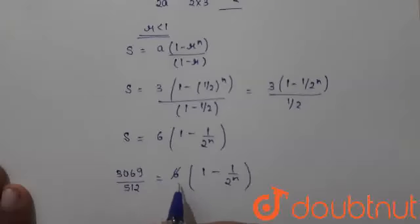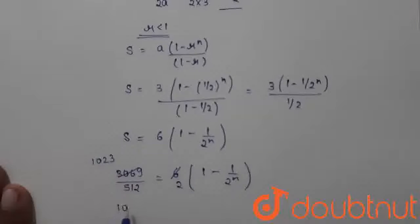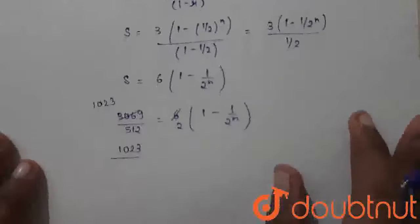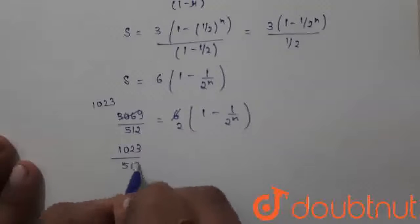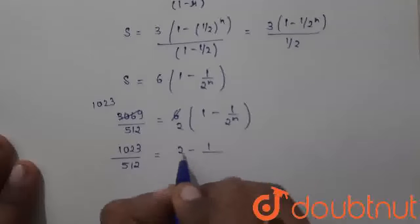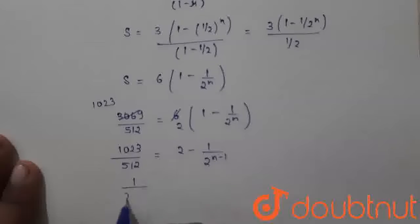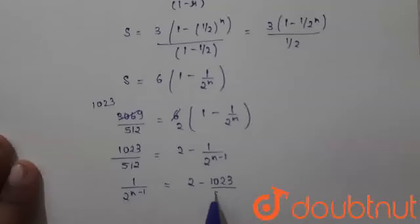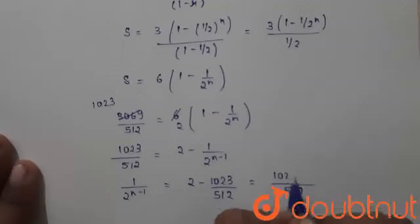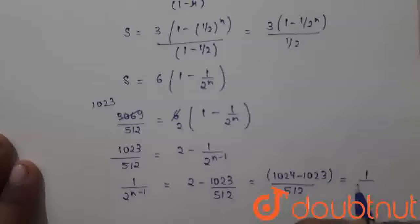This will cancel 3 times — 2 threes are 6. And here will come 1023. We will multiply this 2 times, so 2 minus 2^(n-1). Here we will get 1/2^(n-1) equals 2 minus 1023/512. Which on solving, we will take LCM 512, and here it will come 1024 minus 1023. And we will get 1/512.